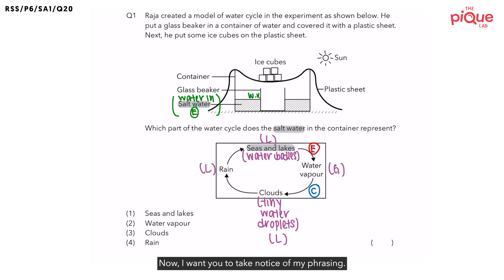Now I want you to take notice of my phrasing. Why is it that I'm saying the water in the salt water evaporates? Why am I not saying that the salt water evaporates? Recall, salt water is made up of two things. It's made up of salt and water. Do you think the salt will be able to evaporate?